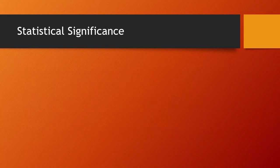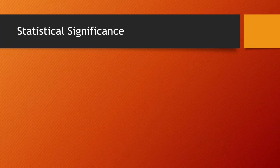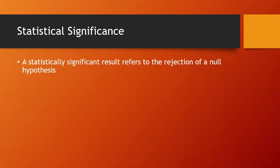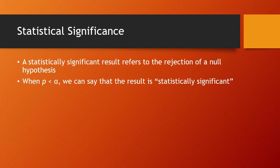A phrase that you will hear frequently when discussing statistical inference is statistical significance, or worse, some people just say significant. A statistically significant result refers to the rejection of a null hypothesis. That's all it means. When we conduct a hypothesis test and the p-value is less than alpha, we say that the result is statistically significant.